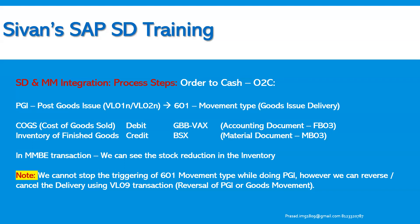One more important point: we cannot stop the triggering of movement type 601 while doing the PGI. Once all the settings are in place and the consultant clicks on the PGI button, it will automatically create two documents — the cost of goods sold account and the material document, that is accounting document and material document. However, we can reverse or cancel the delivery using the VL09 transaction — that is the reversal of PGI or goods movement. During the testing phase in the implementation process, we have to prepare the end-to-end process: sales order, delivery, and billing, and similarly billing cancellation, delivery cancellation, and sales order cancellation. Reversal documents also — we have to prepare one document and share it across the stakeholders.